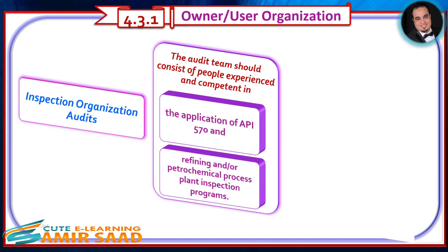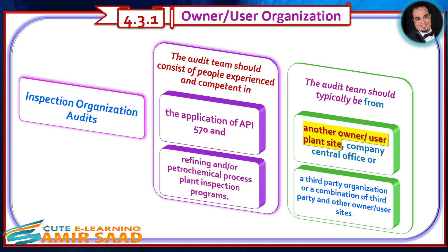Each owner-user organization should be audited periodically to determine if the authorized inspection agency is meeting the requirements of API 570. The audit team should consist of people experienced and competent in the application of API 570 and refining and/or petrochemical process plant inspection programs. The audit team should typically be from another owner-user plant site, company central office, or a third-party organization, or a combination of third-party and other owner-user sites.